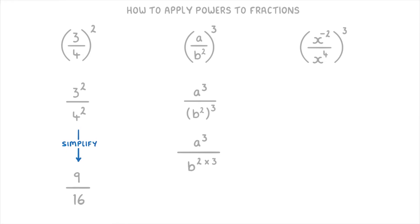Because remember, when you raise one power to another power, you have to multiply the two powers together. So that will give us a cubed divided by b to the power of 6. And that's as simple as we can make it.